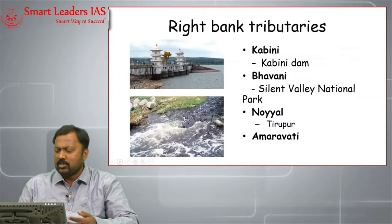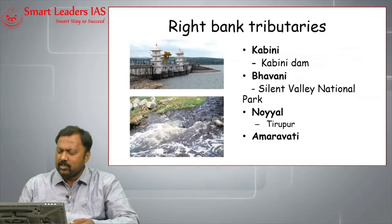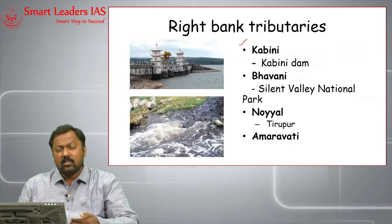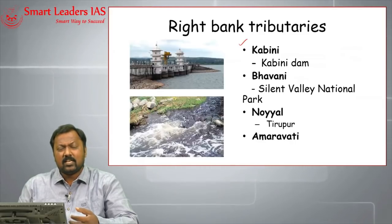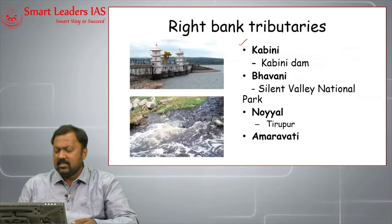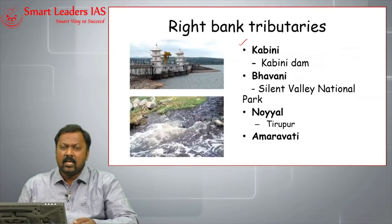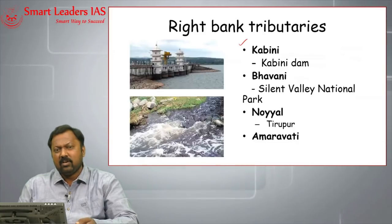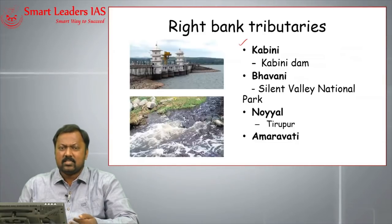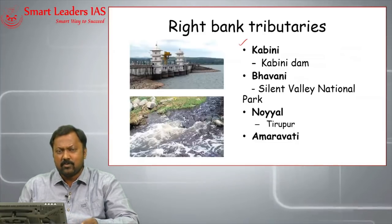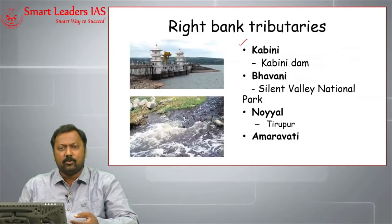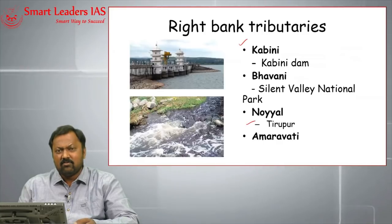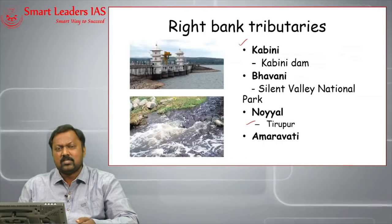There are important right bank tributaries as well. Kabini is a significant right bank tributary, and a Kabini dam has been built on it. Bhavani flows through Silent Valley National Park. Noyal has been in the news recently due to increased pollution — it flows through Tirupur. Amravati is also a right bank tributary.